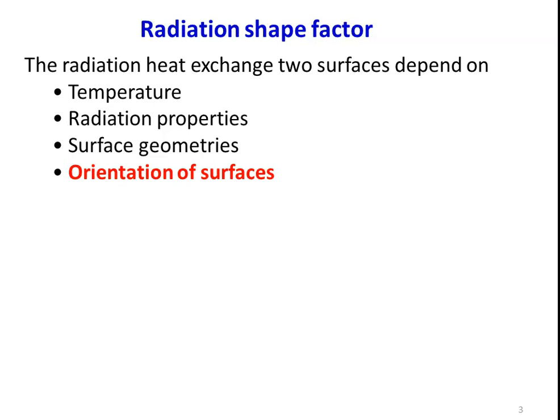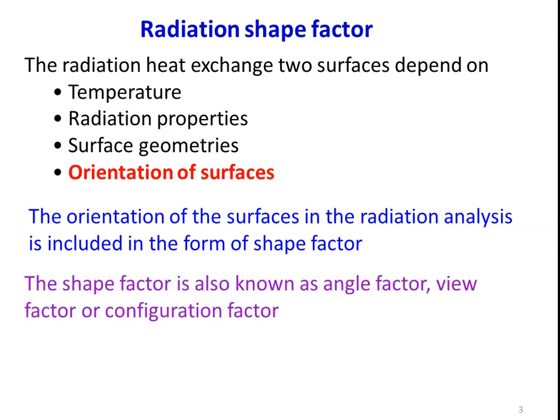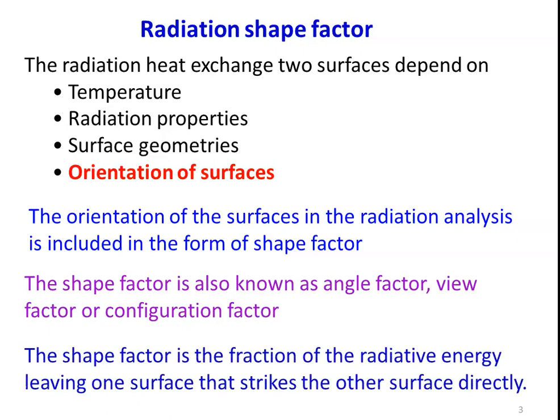The radiation shape factor is also called the orientation factor or view factor. The orientation of the surface in radiation analysis is included in the form of the shape factor. The shape factor is also known as angle factor, view factor, or configuration factor. The shape factor is the fraction of radiative energy leaving one surface that strikes the other surface directly.